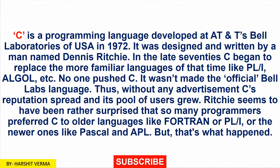In the late 70s, C began to replace the more familiar languages of that time, like PL/I, ALGOL, and others. No one pushed C — it was not made the official Bell Labs language. Without any advertisement, C's reputation spread and it pulled in users. Ritchie seemed rather surprised that so many programmers preferred C to older languages like Fortran or PL/I, or newer ones like Pascal and EPL.